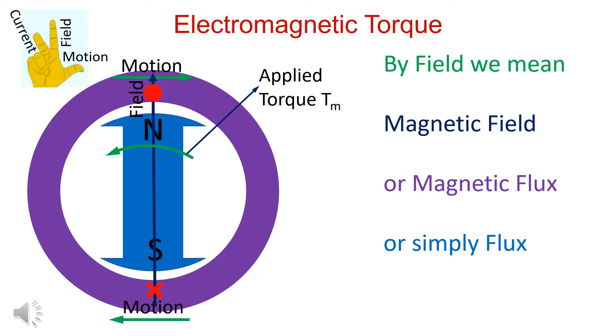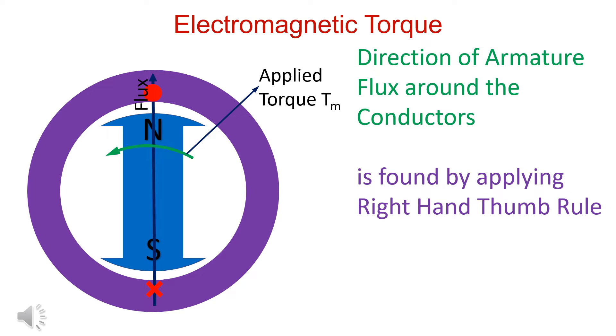By field we mean magnetic field or magnetic flux or simply flux. By applying right-hand thumb rule, the reaction flux around the conductor is obtained and is as shown.